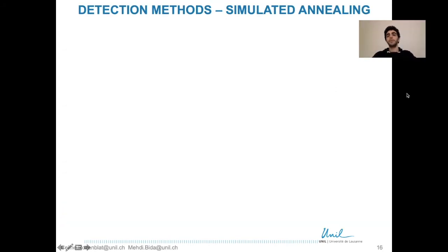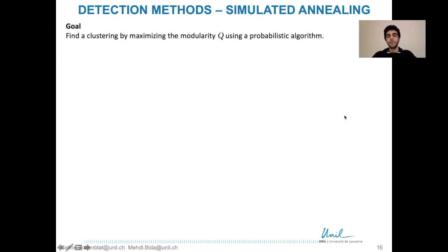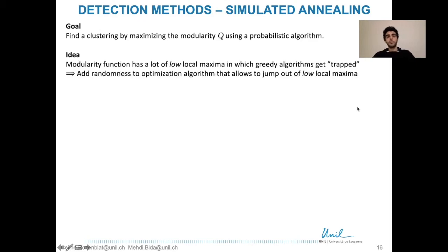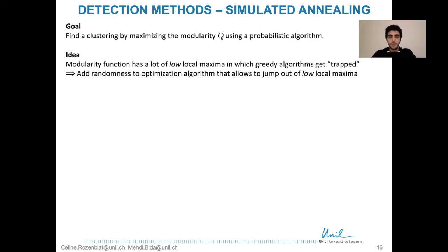This third community detection method also aims at maximizing the modularity q, but this time using a probabilistic algorithm. Why? The modularity function has many local maxima, meaning that from those states you cannot increase modularity in one step, yet globally these maxima are low compared to other possible clusterings. Greedy algorithms, which can only change step by step, get trapped in these local maxima.